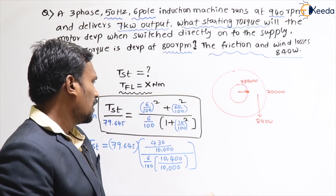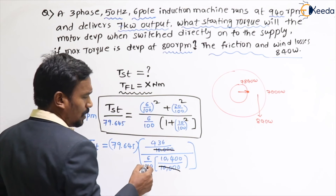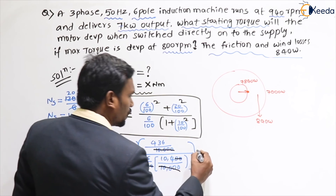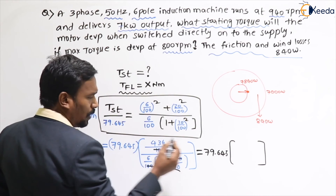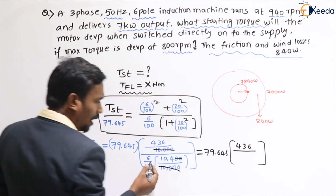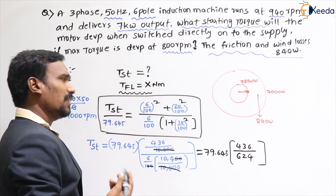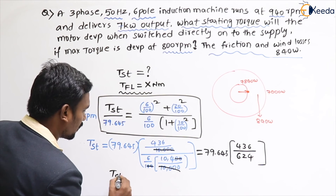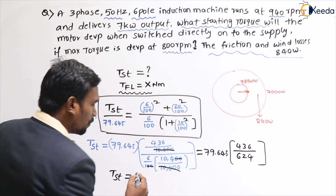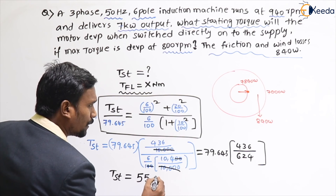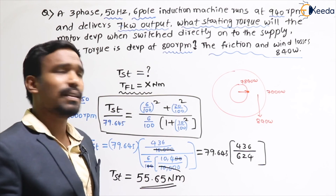After the cancellations, the denominator 624 is greater than numerator 436, so the starting torque will be less than the full load torque. Calculating completely: starting torque = 79.645 × (436/624) = 55.65 Newton meters. This is the starting torque developed by the machine.